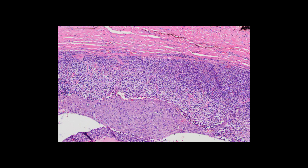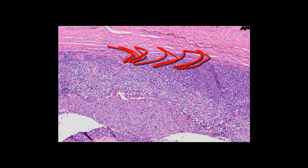Moving to the periphery, you can appreciate this dense lymphoplasmocytic cuff and the surrounding dense fibrous pseudocapsule. Note that despite the low power similarity to a lymph node, there is actually no subcapsular sinus, which is a useful feature in helping distinguish these from lymph nodes.